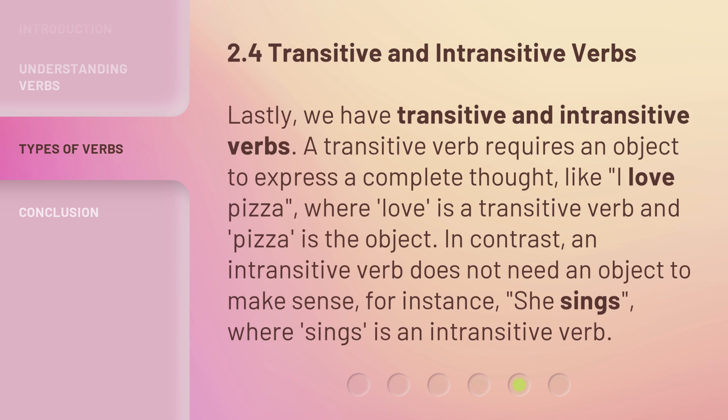Lastly, we have transitive and intransitive verbs. A transitive verb requires an object to express a complete thought — like 'I love pizza,' where 'love' is a transitive verb and 'pizza' is the object. In contrast, an intransitive verb does not need an object to make sense. For instance, 'she sings,' where 'sings' is an intransitive verb.